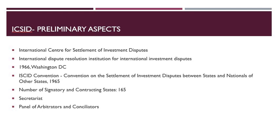The checklist is divided into 12 parts. Each of the items in the checklist is based on existing practices and the relevant rules. Let us briefly discuss the convention. The ICSID is the International Convention on the Settlement of Investment Disputes between States and Nationals of Other States of 1965.